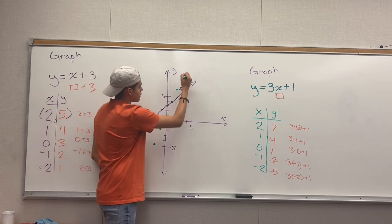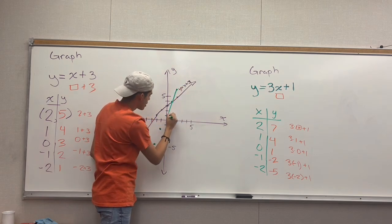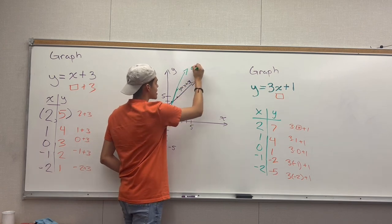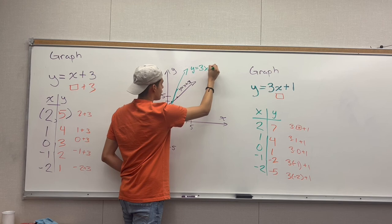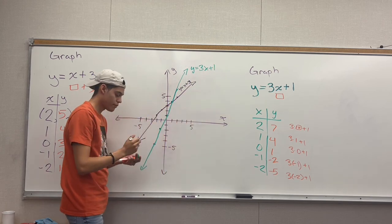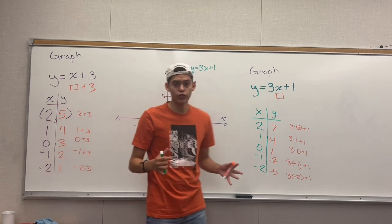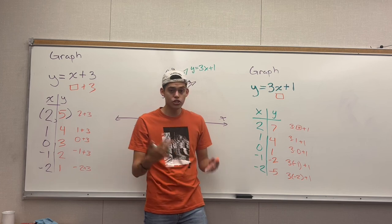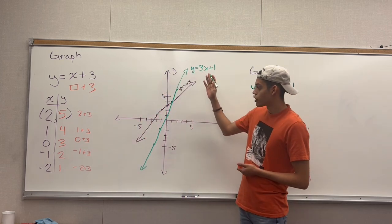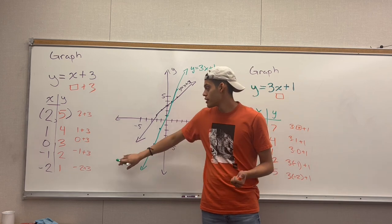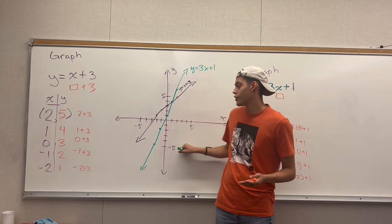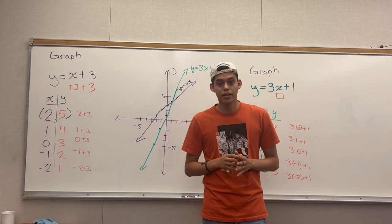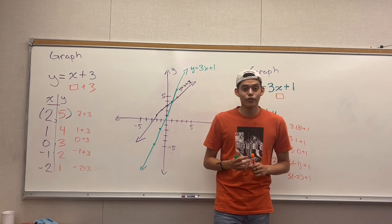You can see these points make a different line than the first one. Connect all the points and draw the line, and name it with its equation: y equals 3x plus 1. Hopefully you guys learned how to make a table with no values, pick your numbers, and draw a graph from your equation. Now whenever your teacher asks you, you know how to draw them. Make sure to like and subscribe and share with your friends. Thank you.